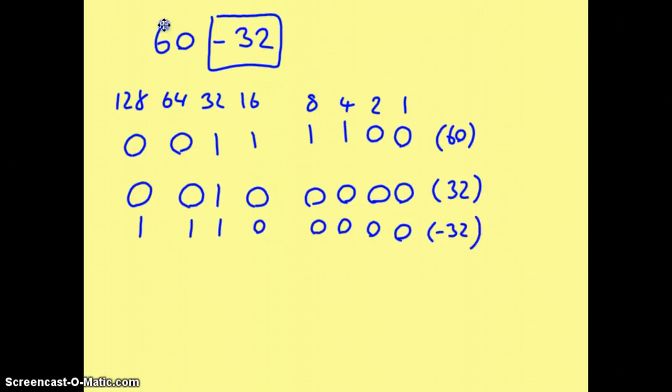Now the easiest way now is to remove 32 from the equation so we don't get confused. So there goes 32, and we're left with 60 and minus 32. And now it's simply adding these together.